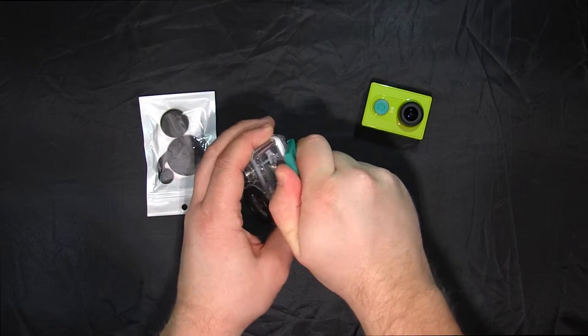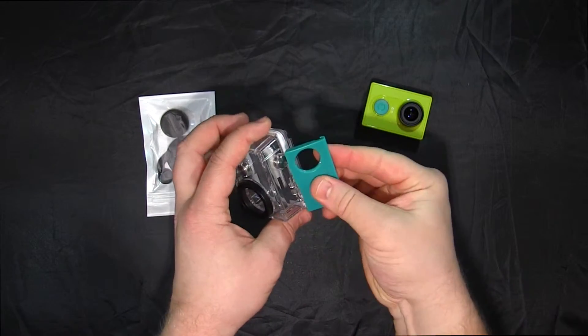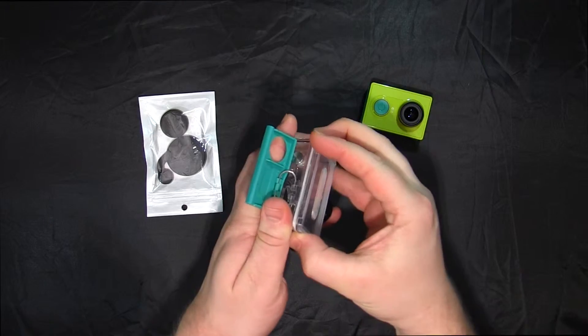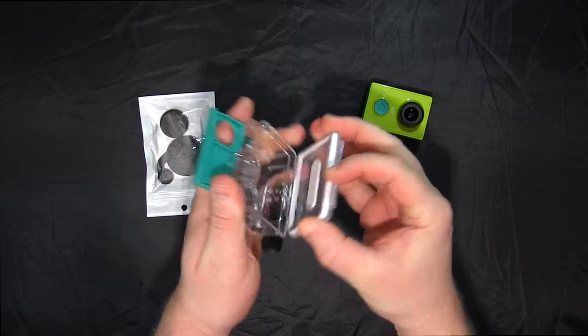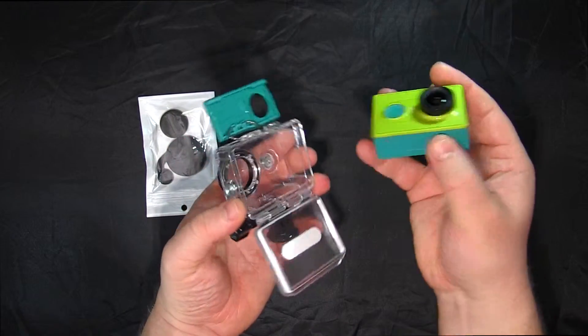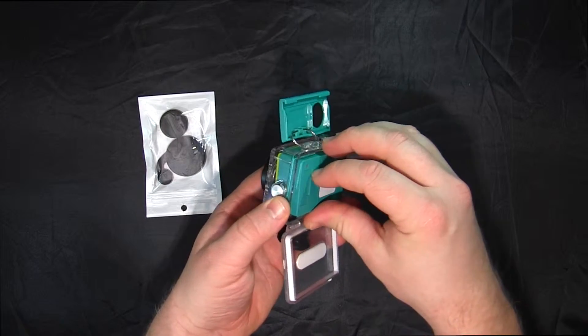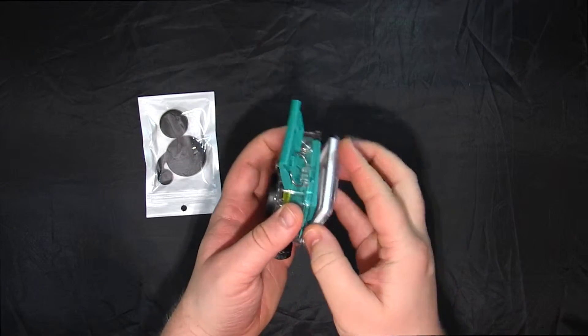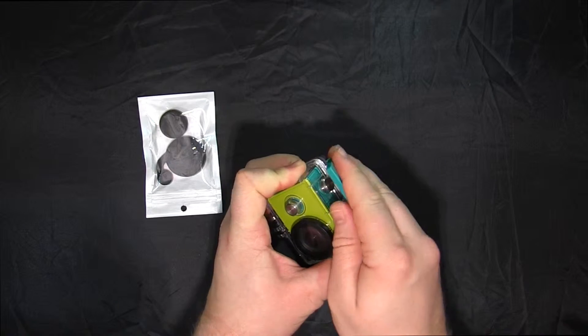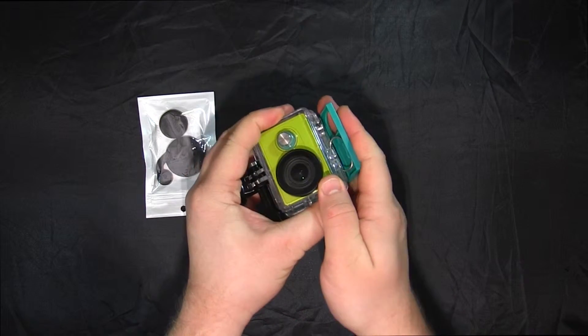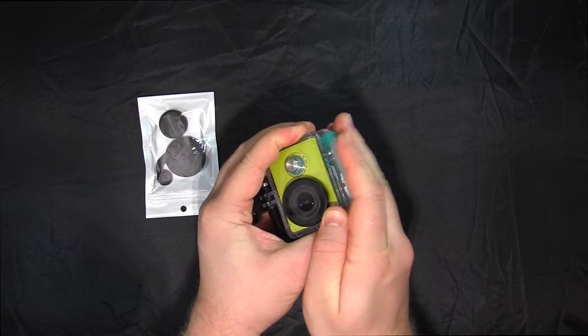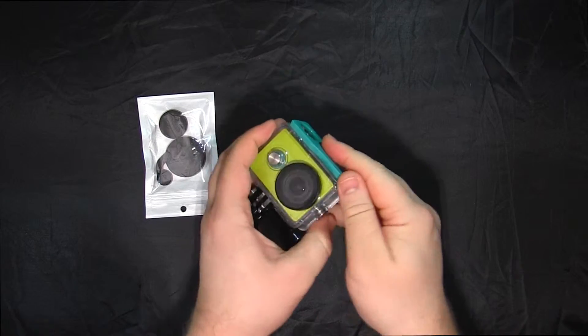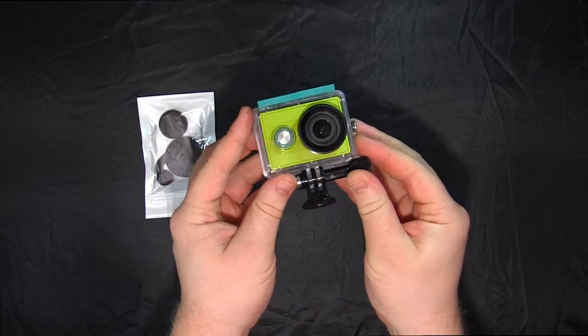Теперь давайте откроем кейс. Плотненько держит. Ставим нашу Xiaomi Action Camera и посмотрим, как это все вместе будет выглядеть. Ну вот, как-то так.